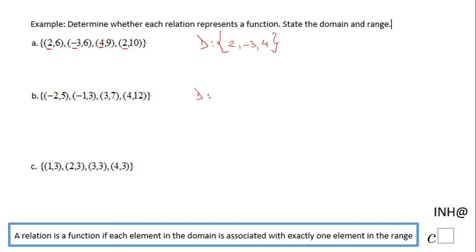And again you see that number 2, you don't have to list it twice, you list it only once. Let's go to the second one and list the domain. The domain will be negative 2, negative 1, 3, and 4.